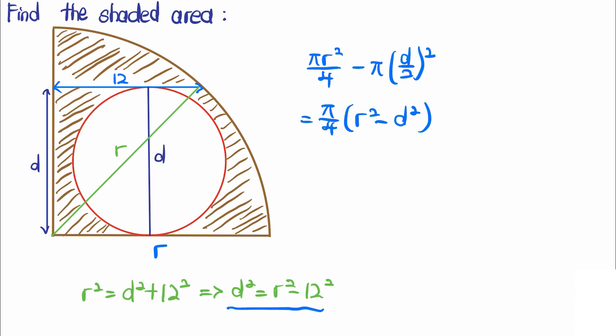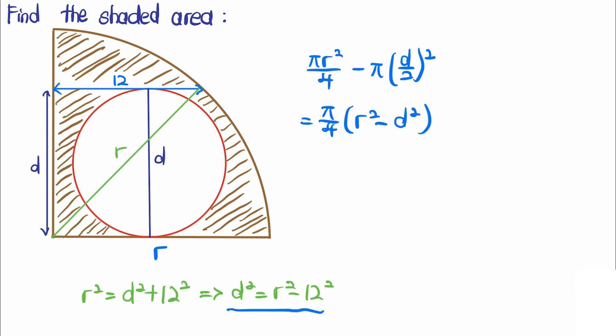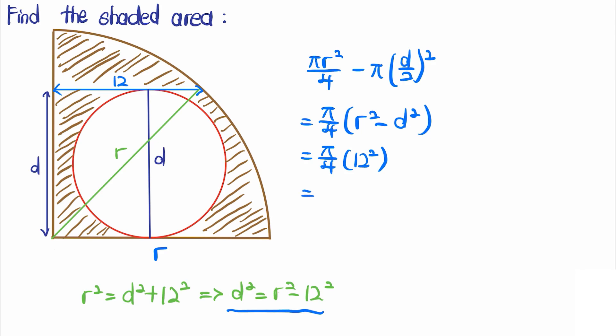From this equation here, we know that r² minus d² is actually just 12². So we have our final answer is actually just 36π, since 12² is equal to 144, and 144 divided by 4 is 36. We are done.